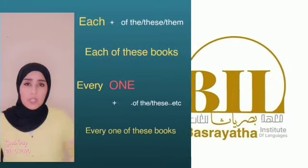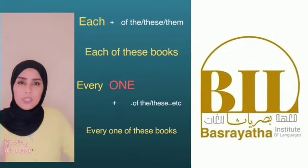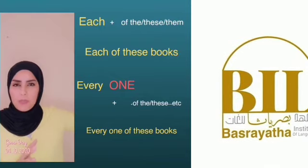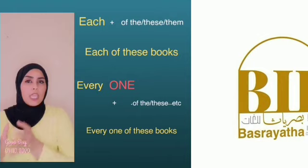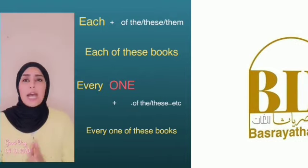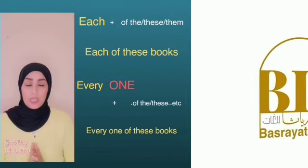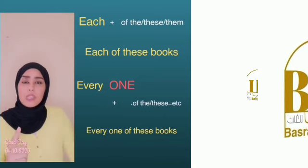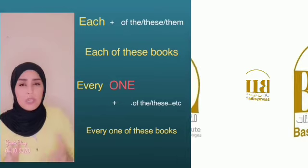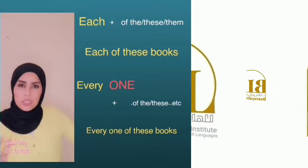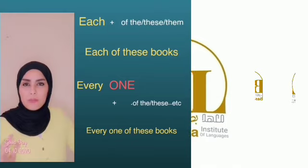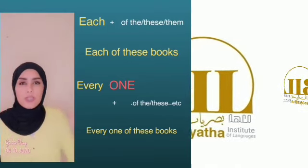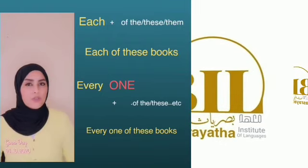Moreover, you can say 'each of those,' 'each of them,' etc., without a noun directly after 'each.' For example: 'Each of these books has different topics.' However, you can't use 'every' followed directly by 'of.' You must say 'every one of these' or 'every one of them.' For example: 'Every one of these books has different topics.'